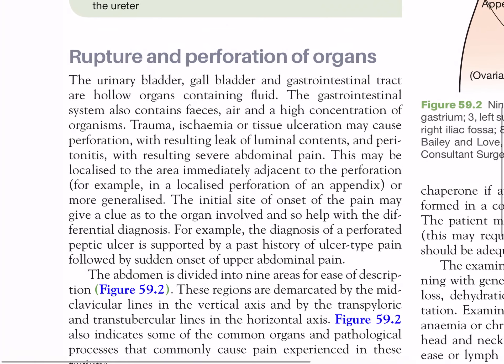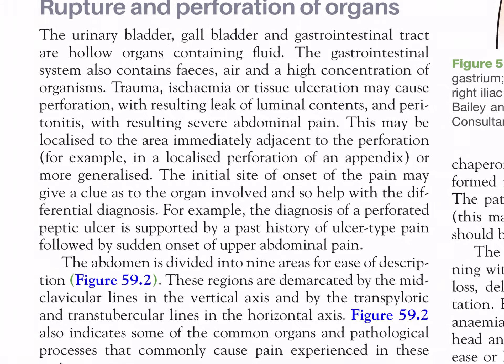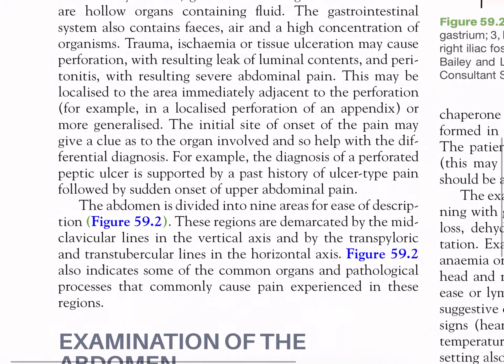Rupture and perforation of organs: the urinary bladder, gallbladder, and gastrointestinal tract are hollow organs containing fluid. The gastrointestinal system also contains feces, air, and a high concentration of organisms. Trauma, ischemia, or tissue ulceration may cause perforations with resulting leak of luminal contents and peritonitis with severe abdominal pain. This may be localized to the area immediately adjacent to the perforation — for example, a localized perforation of an appendix — or more generalized. The initial site of onset of the pain may give a clue as to the organ involved. For example, the diagnosis of a perforated peptic ulcer is supported by a past history of ulcer-type pain followed by sudden onset of upper abdominal pain.